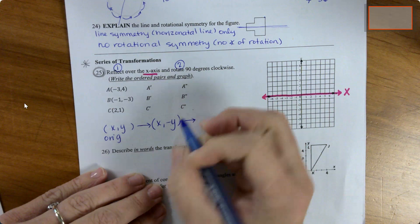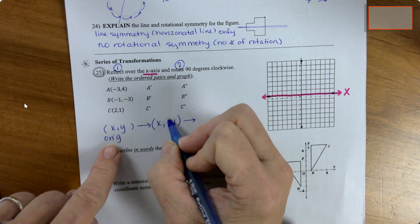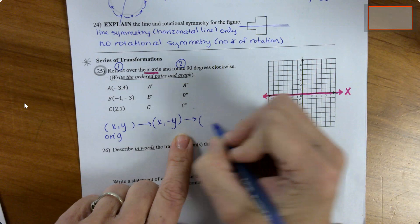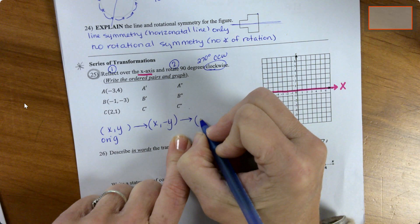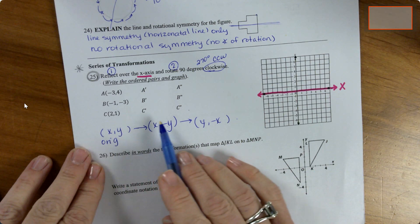Then this image becomes the new original. Don't start back with this. Go from this one to this one, and a 90 degree rotation clockwise is the same thing as 270 counterclockwise. So that would be y opposite x. Just to kind of clarify that we're gonna turn this one into this one, and then we're gonna turn this one into this one. Don't go back to the original.